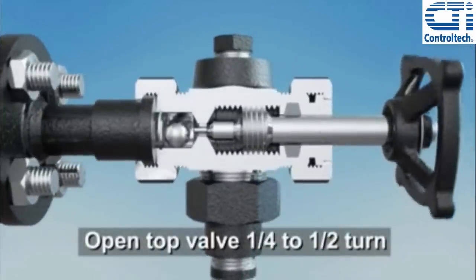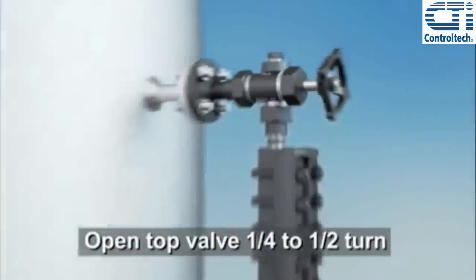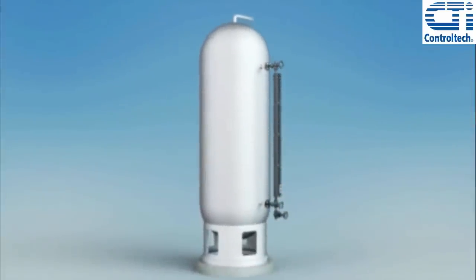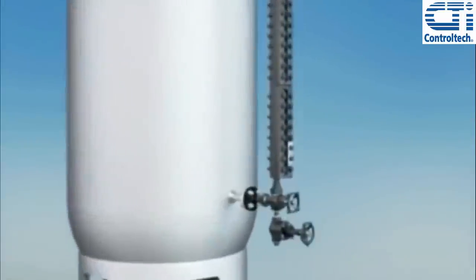The first step is to open the top valve one quarter to one half turn. It's always best practice when commissioning any Jurgeson level product to open the top valve first.